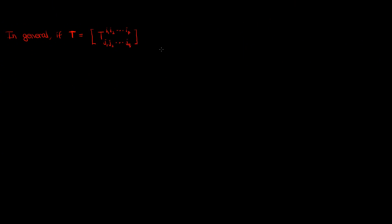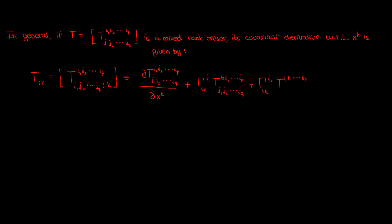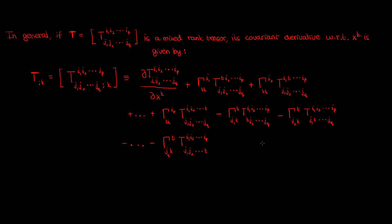In general, if you want to find the covariant derivative with respect to x super k of a general mixed tensor of contravariant rank p and covariant rank q, this would be your formula. You subtract a second-kind Christoffel symbol term for each covariant rank, and add a second-kind Christoffel symbol term for each contravariant rank. You can derive this yourself, but I'll warn you that the notation can get quite cumbersome.